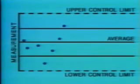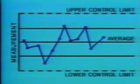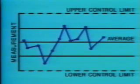A control chart is simply a run chart with statistically evaluated upper and lower lines drawn on either side of the process average, which helps determine if the process is operating normally.